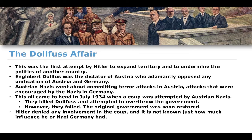This was the first attempt to take over Austria and expand into Austrian territory, and it ended in failure in 1934. A couple of years later, Hitler would make a similar attempt — this time successful — when he concluded the Anschluss with Austria. But for now, the Dollfuss Affair showed that Hitler was not particularly successful in his early expansionist policy.